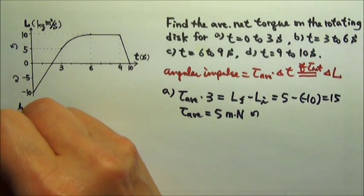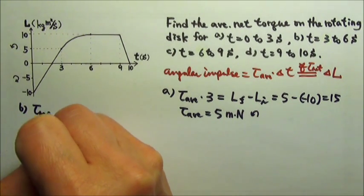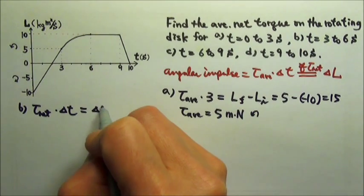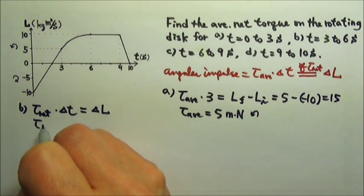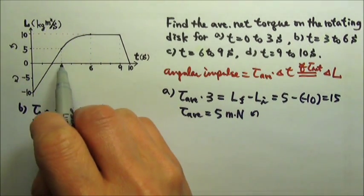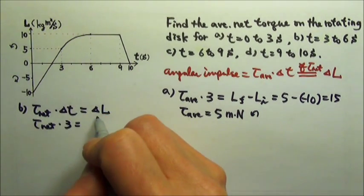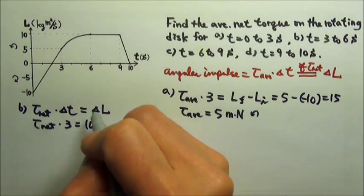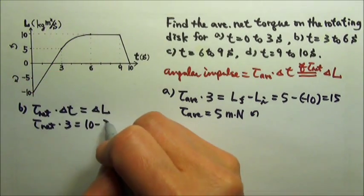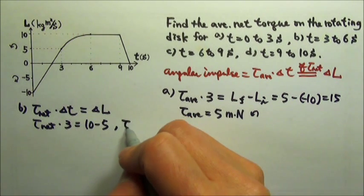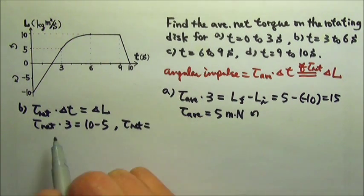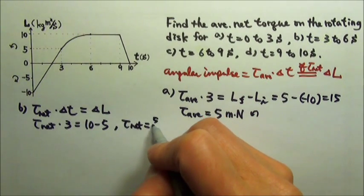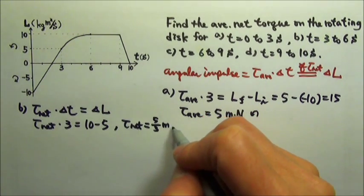And in part B, the net torque times time equals the change in angular momentum. We're looking for the net torque. The time from three to six seconds is three seconds. And delta L is the final value 10 minus the initial value 5. So the net torque equals 10 minus 5, 5 divided by 3. So it's 5 thirds meter newtons.